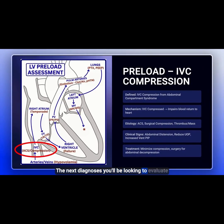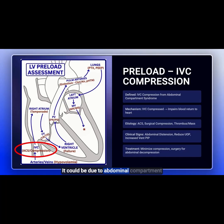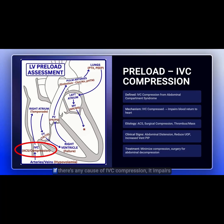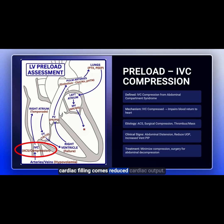The next diagnosis to evaluate for in the preload section is IVC compression. It could be due to abdominal compartment syndrome, surgical compression, or from a thrombus or mass. If there's any cause of IVC compression, it impairs blood return to the heart, and with this reduced cardiac filling comes reduced cardiac output.